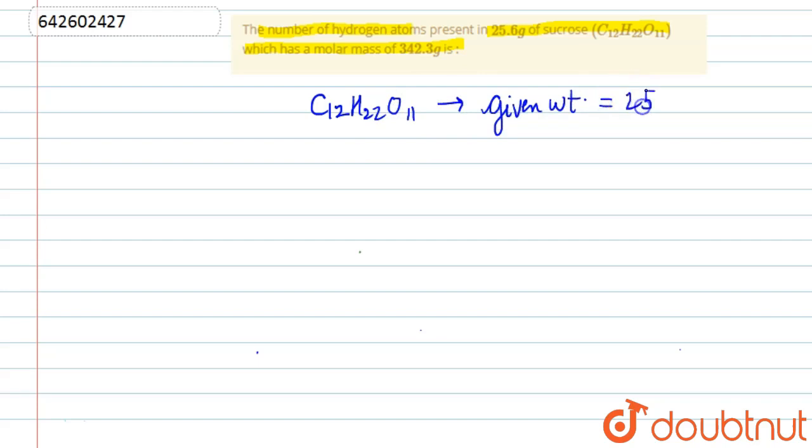We are given the molar mass of sucrose, that is 342.6. Now, firstly we will calculate number of moles of sucrose. Number of moles is the given weight over the molecular mass: 25.6 divided by 342.6, which will be 0.747.